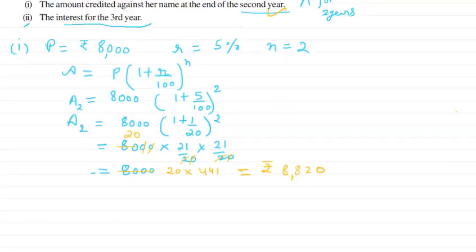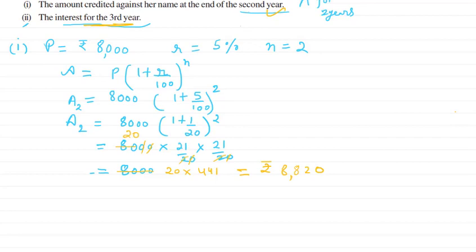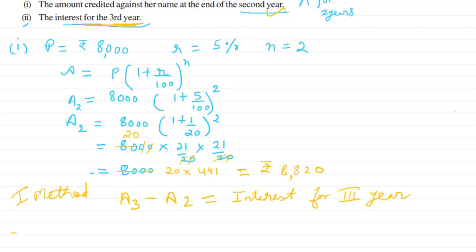Now for the second part, we have two methods. We have to find the interest for only the third year — not the interest for the first and second year. In the first method, you can find A3, which is the amount for three years, and then subtract A2, the amount for two years. That will give you the interest for the third year.